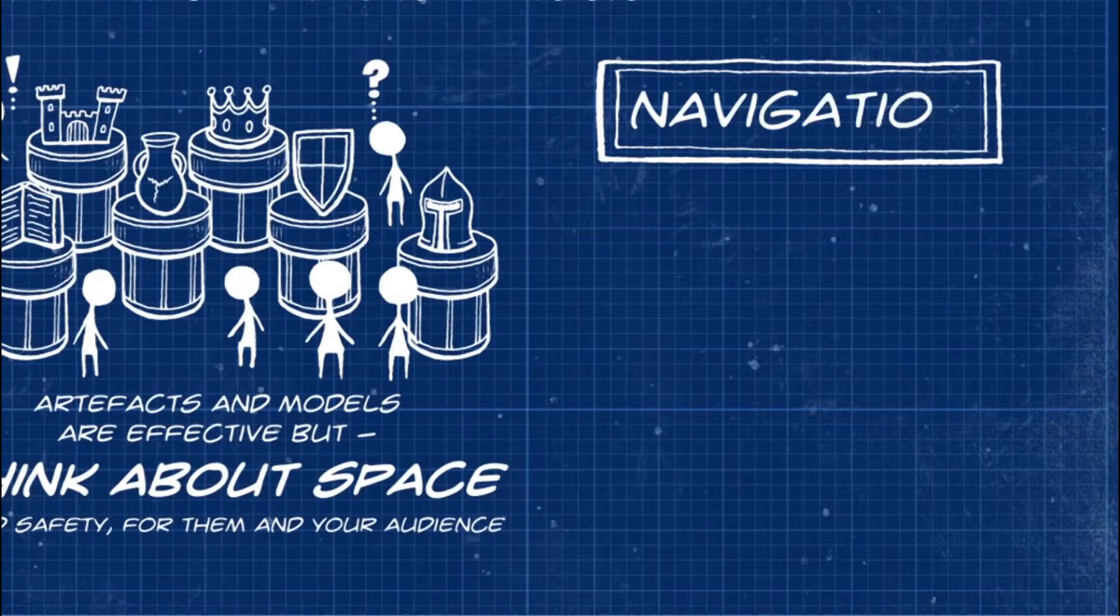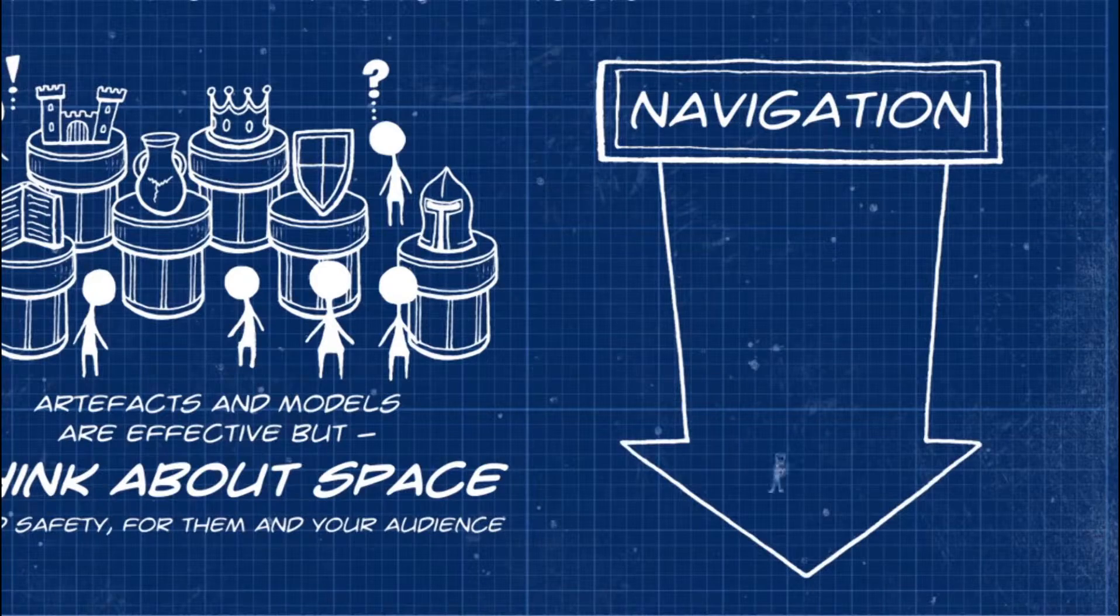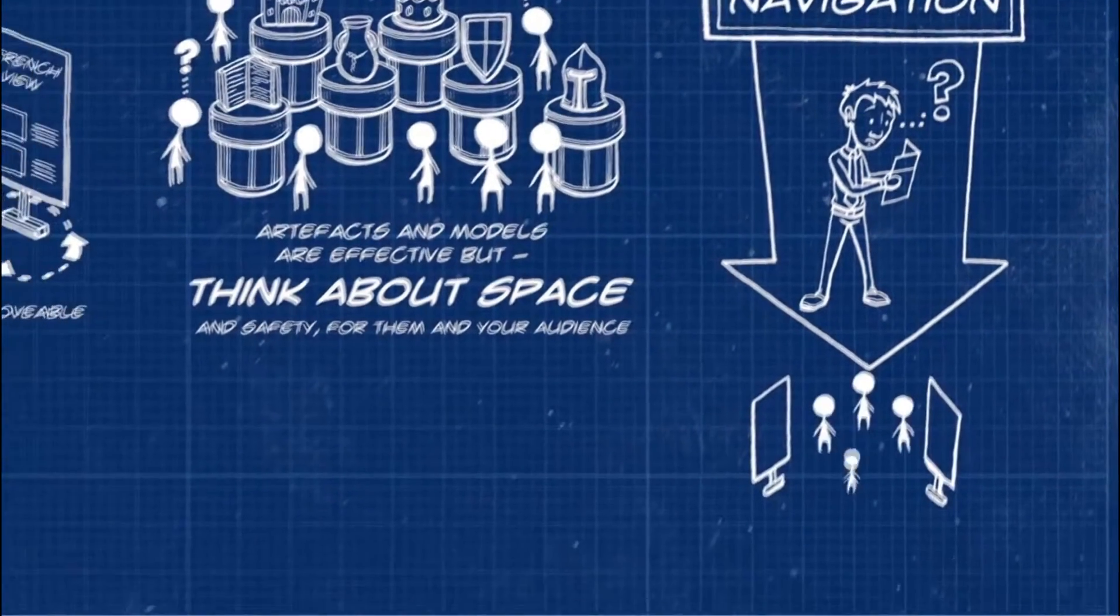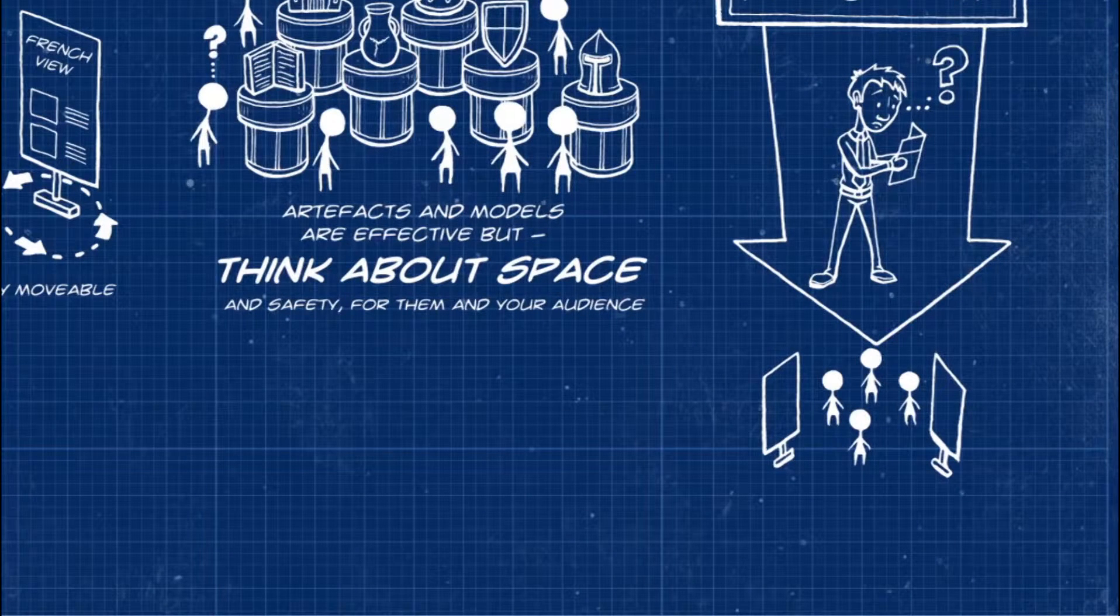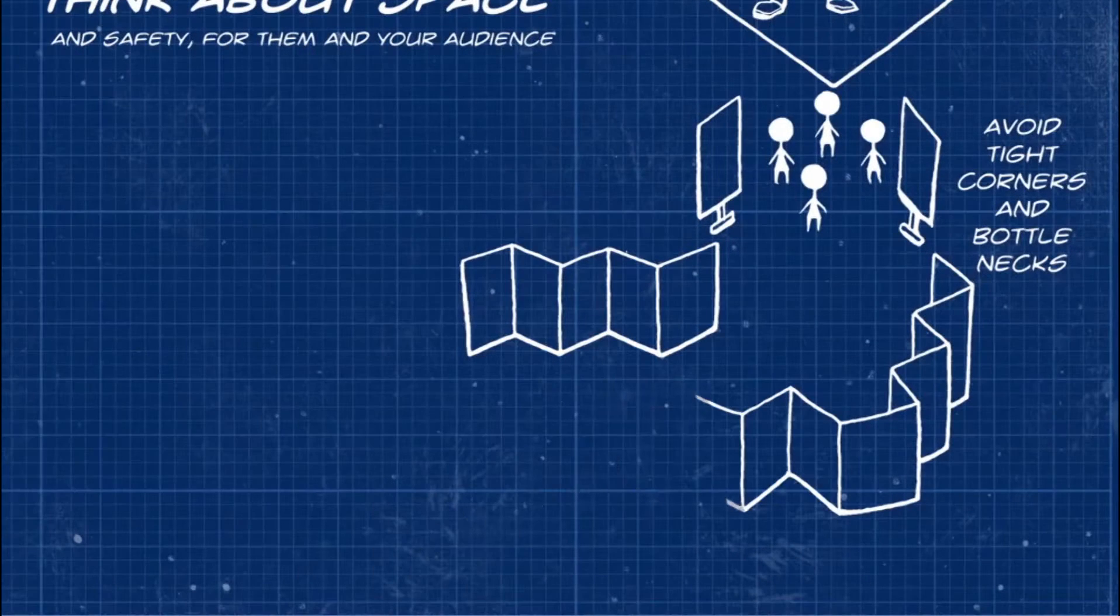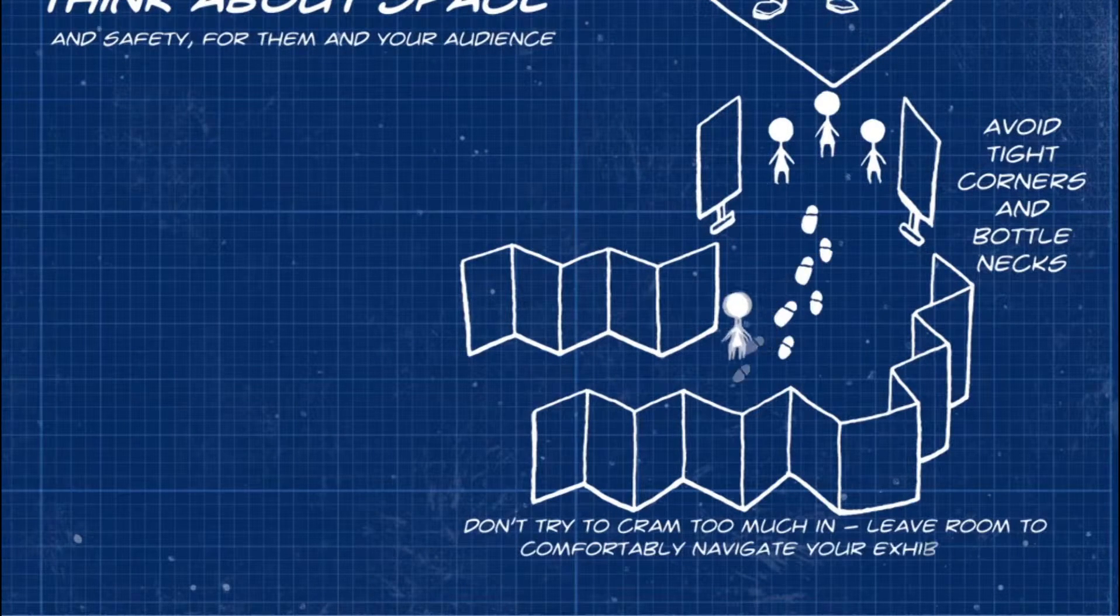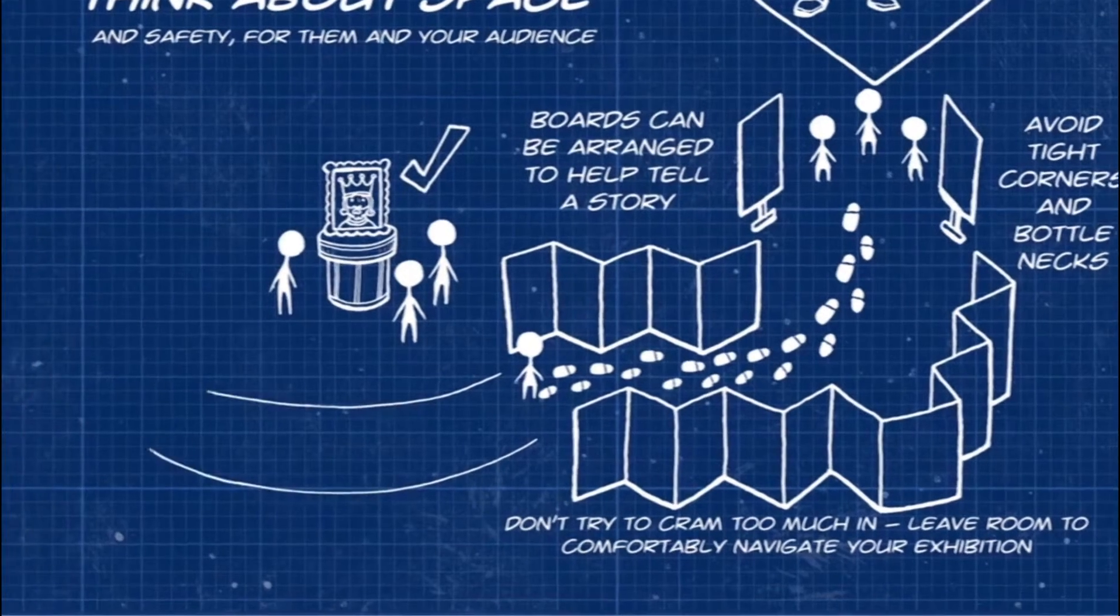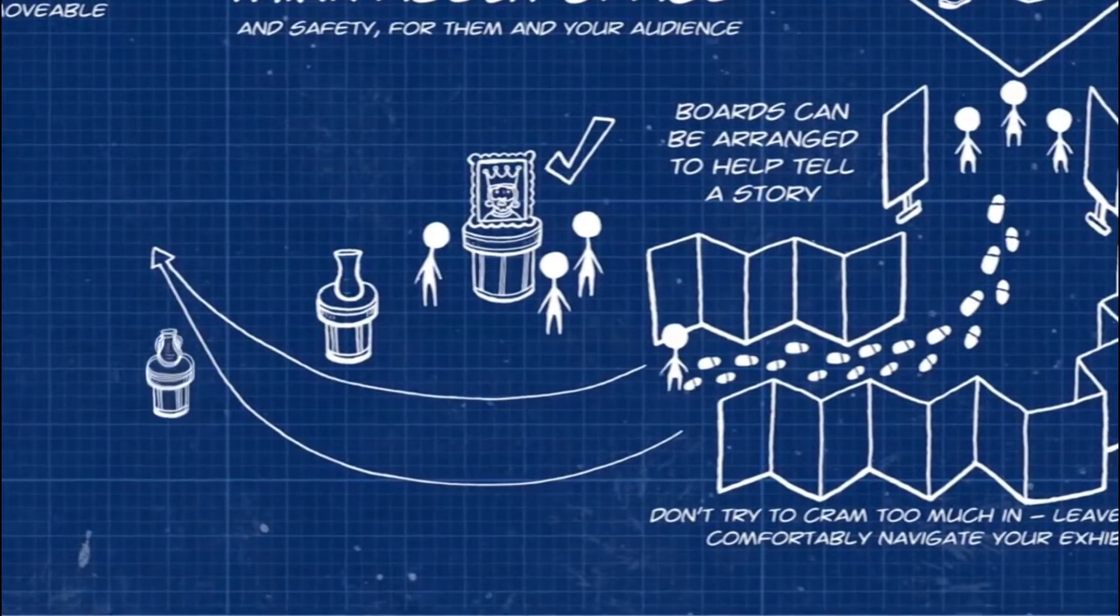It is also important to think about how visitors will navigate your exhibition. Make sure your visitors can comfortably view and find their way around your exhibition, and avoid bottlenecks and tight corners. Think about how many people can gather around your display comfortably at any one time, and ask whether they can follow your story without getting in each other's way.